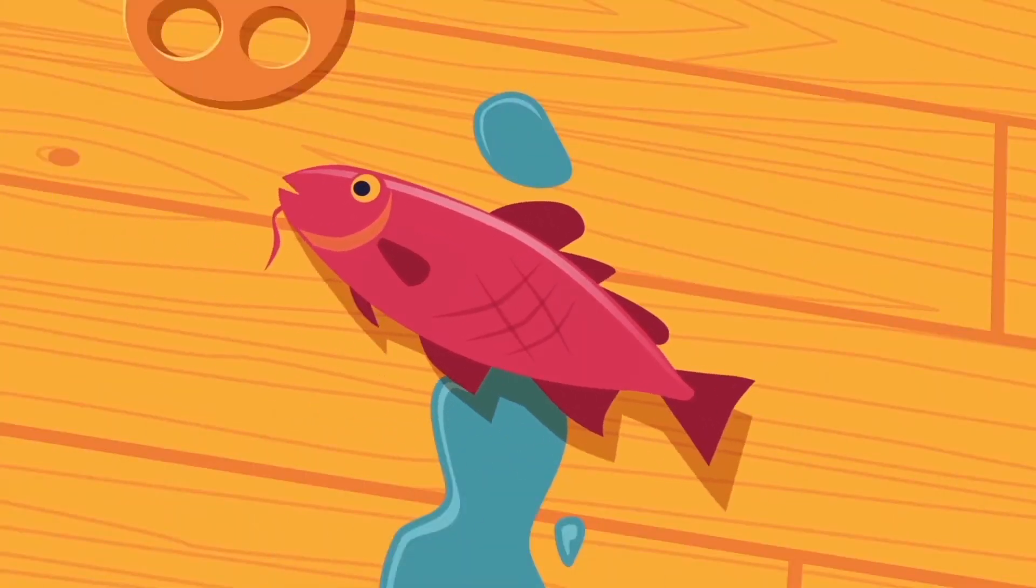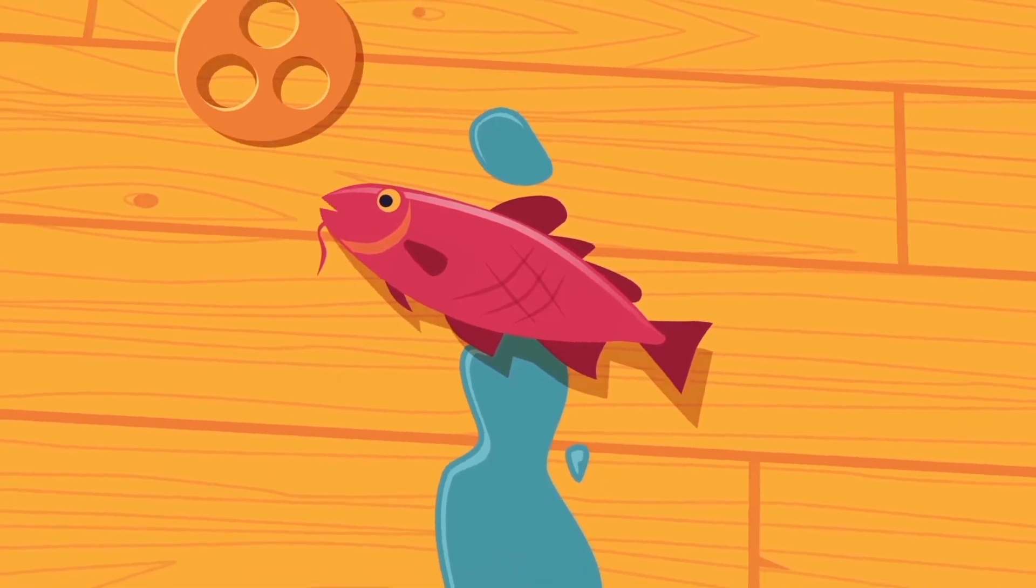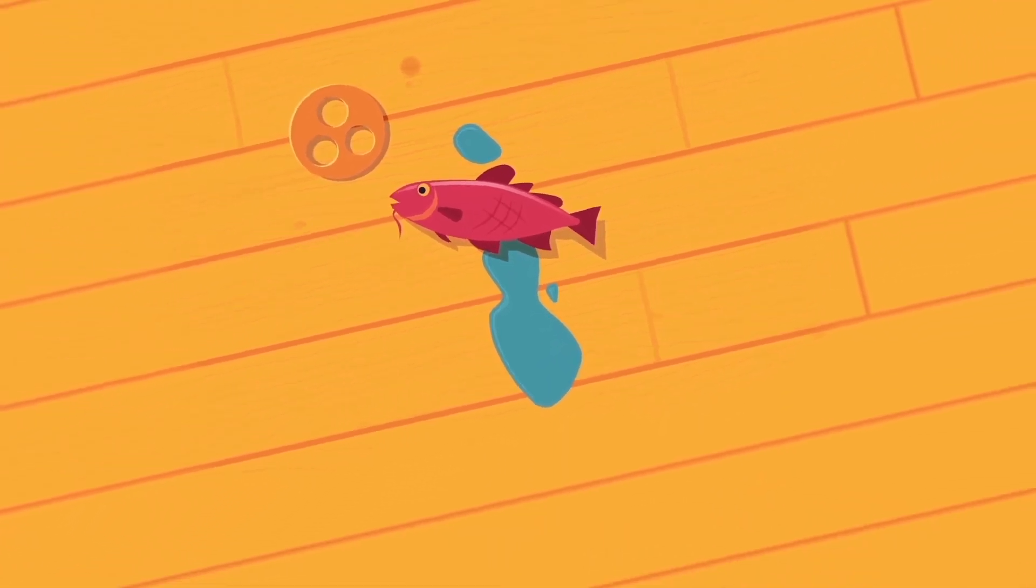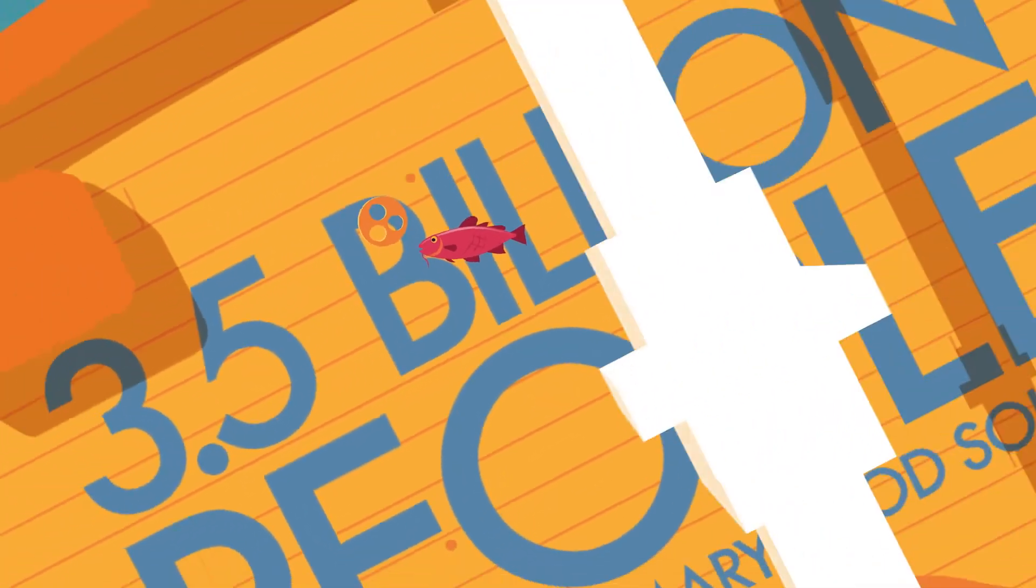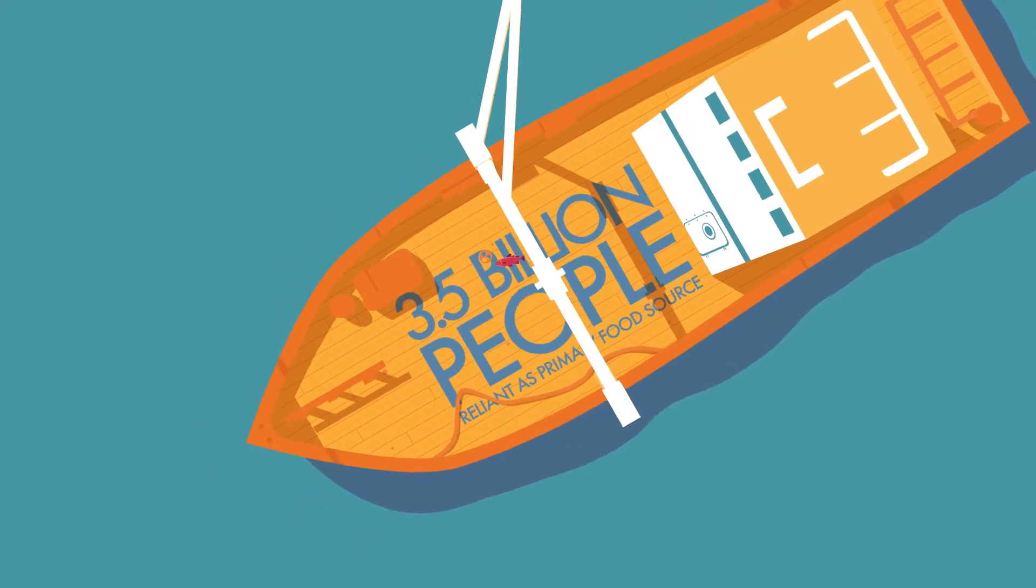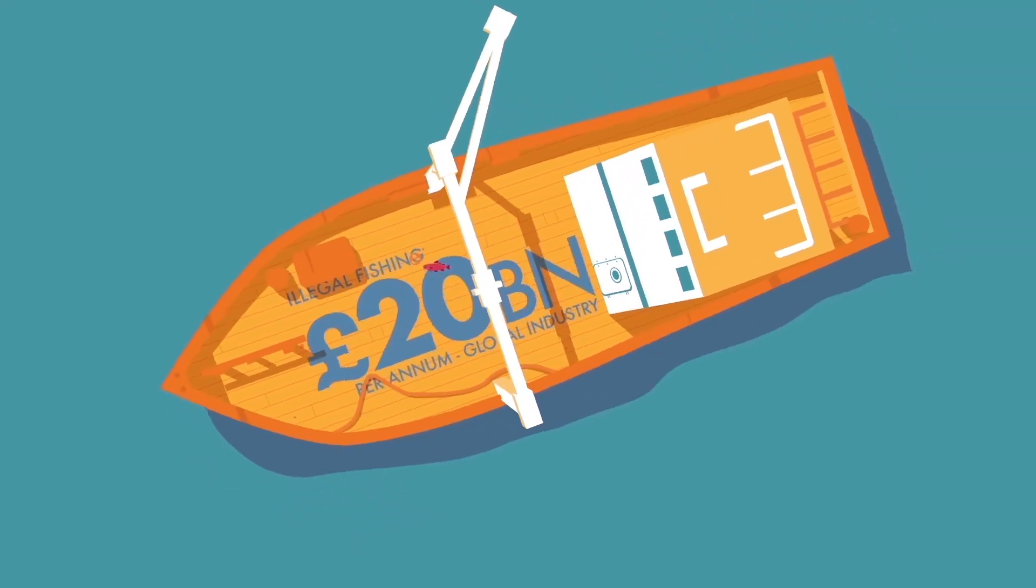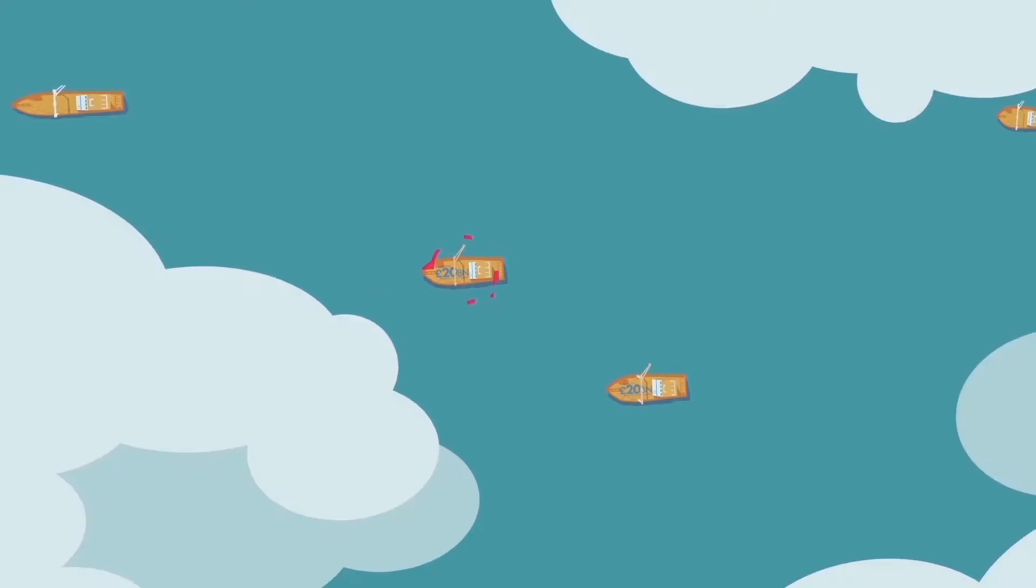The sea provides most of our protein, as well as feed for livestock. But being out of sight of land often means being out of sight of the law too. Illegal fishing is now a £20 billion per year global industry.